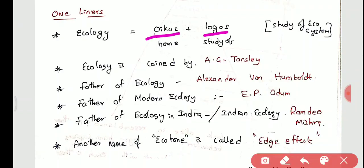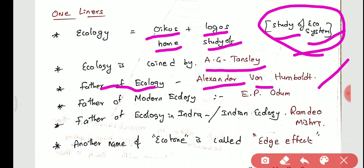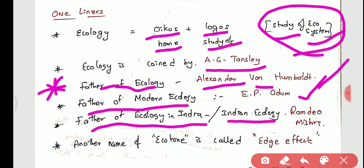Key one-liners: Ecology comes from the Greek words 'oikos' (home) and 'logos' (study) — the study of our home, i.e., the study of the ecosystem. Ecology was first coined by A.G. Tansley. The father of ecology is Alexander von Humboldt. The father of modern ecology is E.P. Odum. The father of ecology in India is Ramdeo Misra. Ecotone is also known as the edge effect.